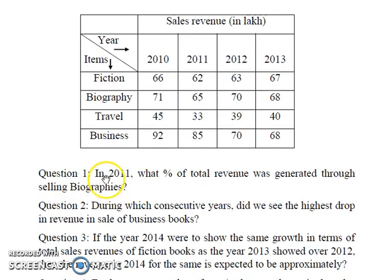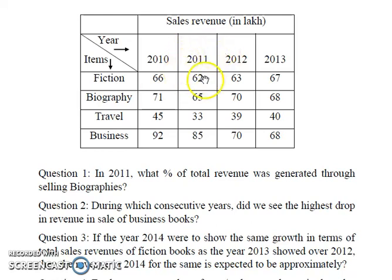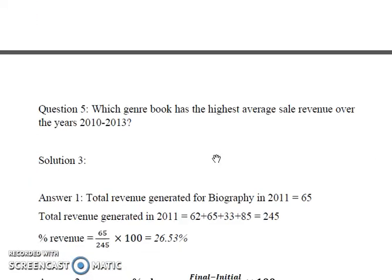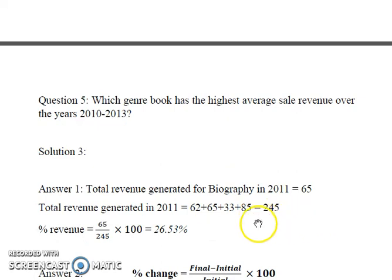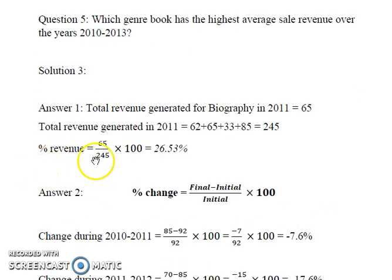In 2011, what percentage of total revenue was generated through selling biographies? As we can see in the table, the total revenue generated for biography in 2011 equals 65 lakh, and the total revenue generated from all genres of books in 2011 is equal to 245 lakh. Therefore, the percentage revenue equals 65 divided by 245 times 100, which gives us 26.53 percent.